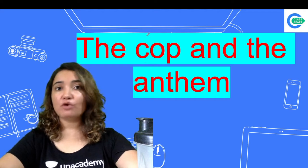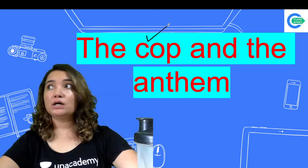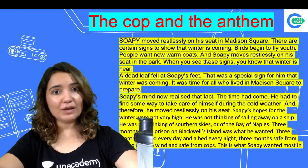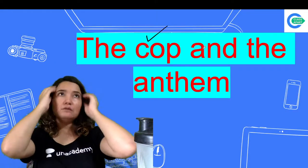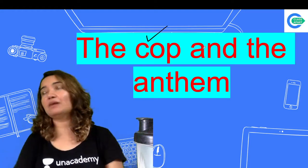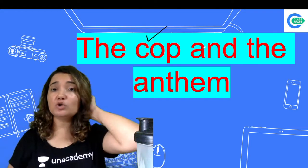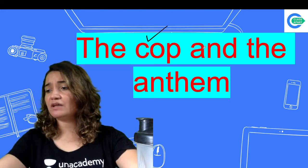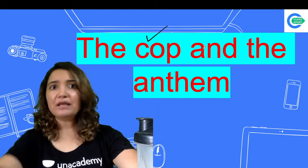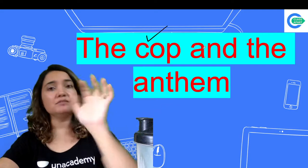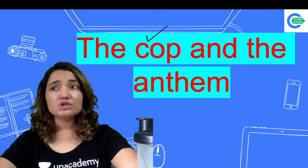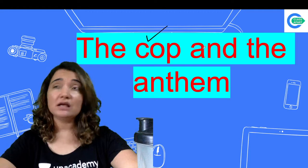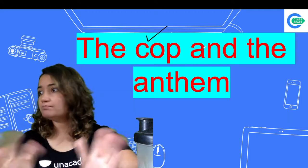Let's begin 'The Cop and the Anthem'. You all know what a cop is — a police officer or someone in the armed forces. Before we go ahead, I'll tell you a little about this story. Sometimes we have situations where we have thought something and it turns out to be the opposite — all situations are very ironic. This is such a story. The main character is called Sopi, who is basically jobless — he has no house or job. It is a story set in the US.